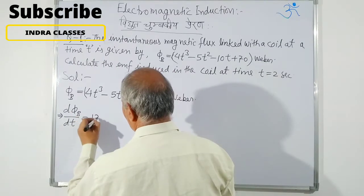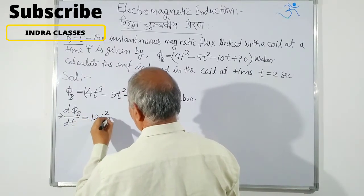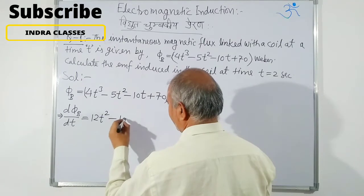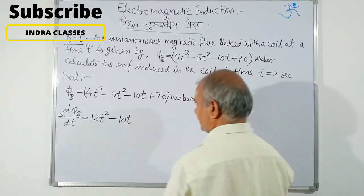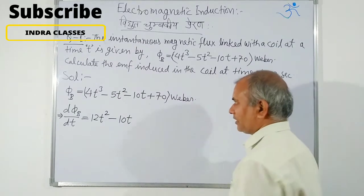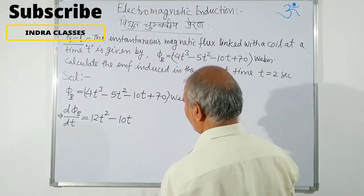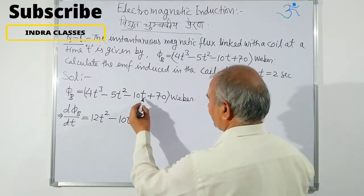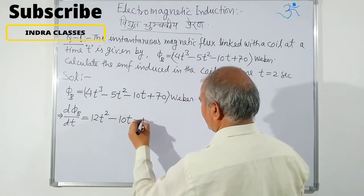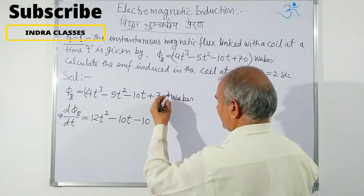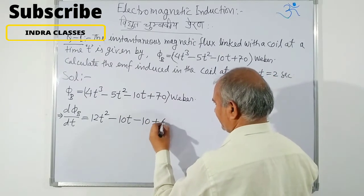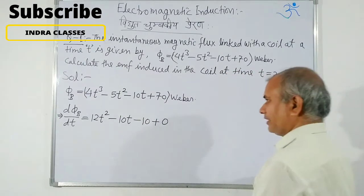So 4×3 gives t², minus 5×2 gives 10t. The power decreases by 1 unit — so 2 minus 1 is 1. This is the differentiation of t. And the constant term vanishes.